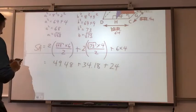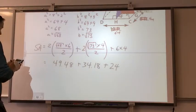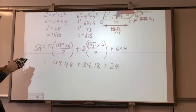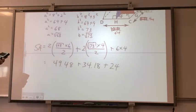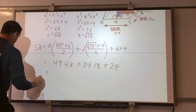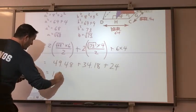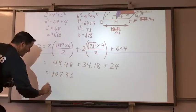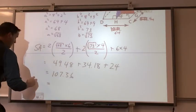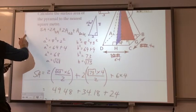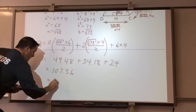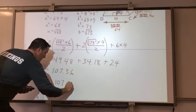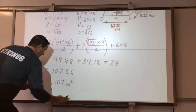6 times 4 is 24. Now, add them all together. 49.48, plus 34.18, plus 24. So, all three added together give me 107.36. You want to round to the nearest meter. Meter squared. Is that correct? Meter squared. Square meter.